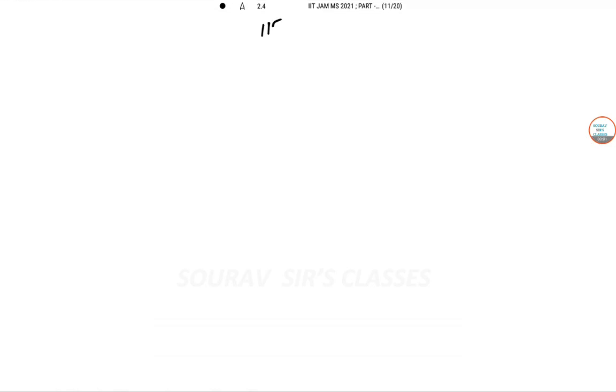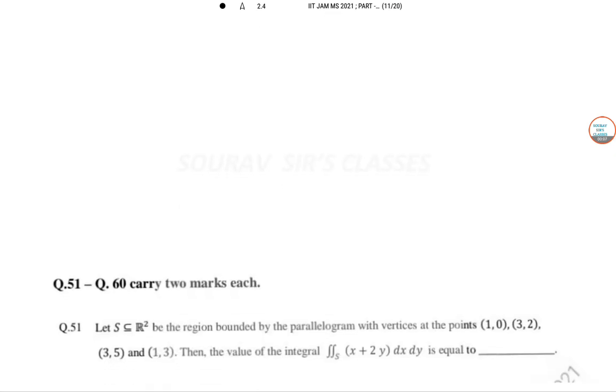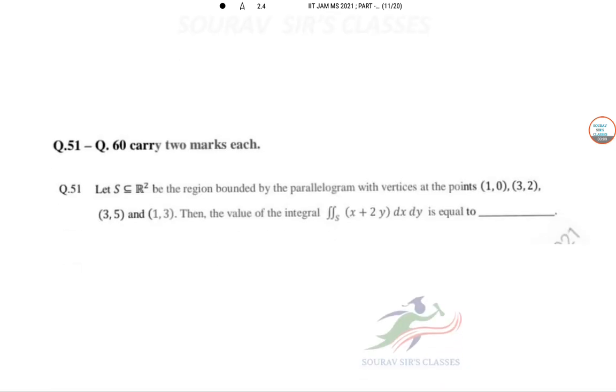From Sources Classes, today we are solving IIT JAM 2021 Mathematical Statistics paper, and here we are solving problem 51. Let S ⊆ ℝ² be the region bounded by a parallelogram with vertices (1,0), (3,2), (3,5), and (1,3). We need to find the value of the integral, so let's just draw it.